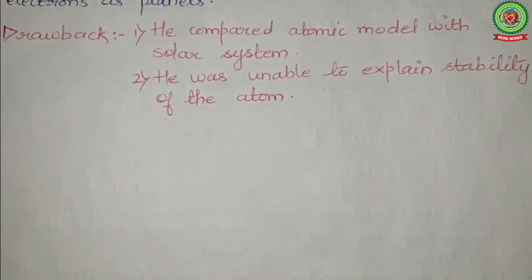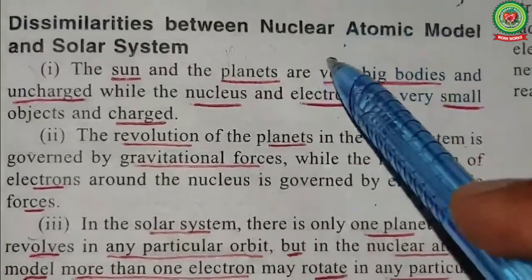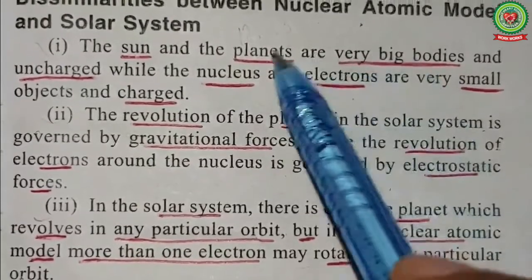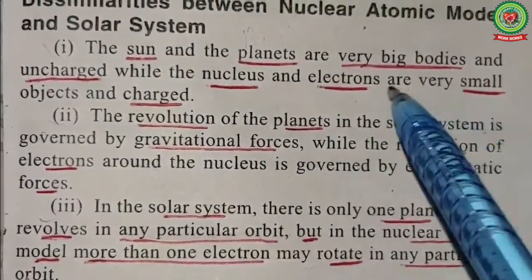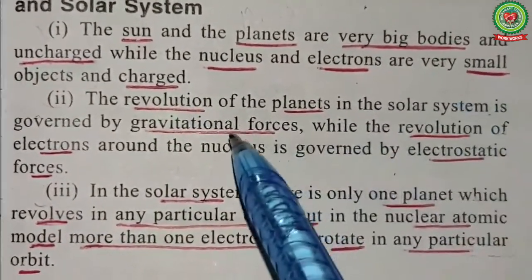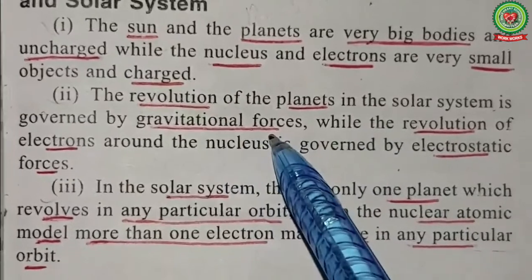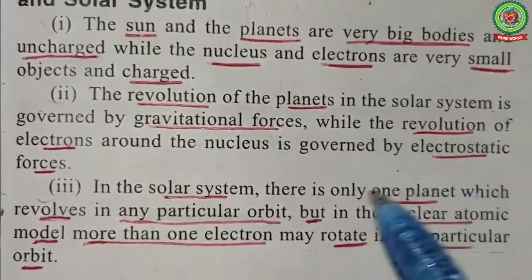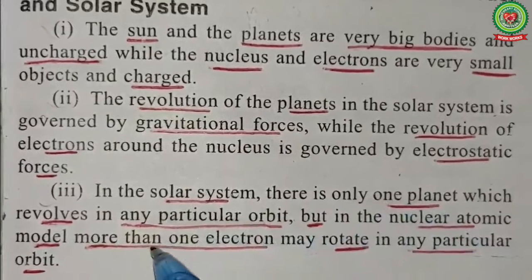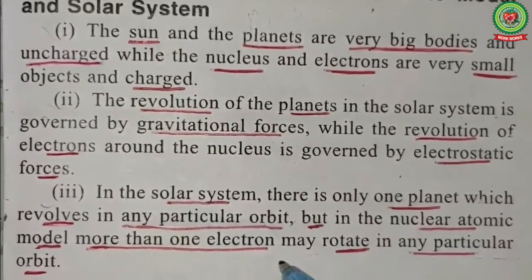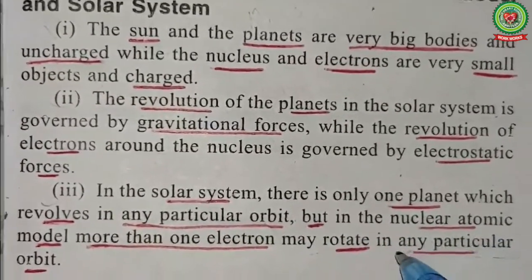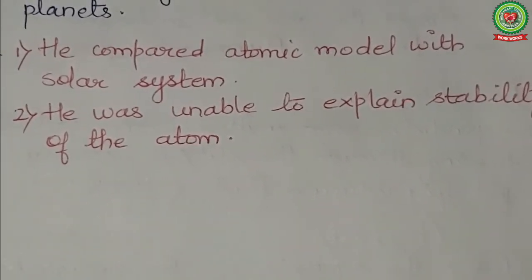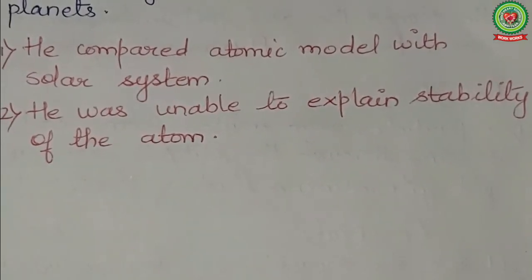The drawbacks of Rutherford's model were: First, he compared the atomic model to the solar system, but there are dissimilarities. The sun and planets are very large bodies, whereas electrons and the nucleus are extremely small. Revolution of planets is governed by gravitational force, but revolution of electrons around the nucleus involves electrostatic forces between positive and negative charges. In the solar system only one planet occupies a particular orbit, but in Rutherford's model more than one electron can rotate in any given orbit. Second, he was unable to explain the stability of an atom — according to classical mechanics, a moving charged particle radiates energy.